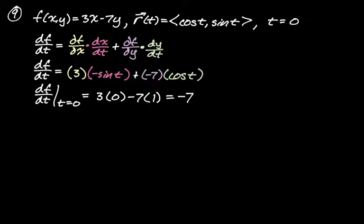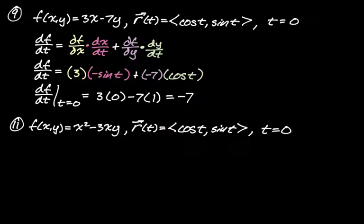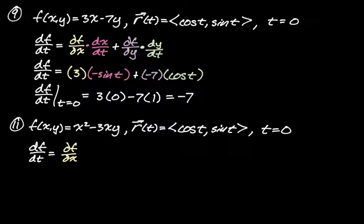That's a pretty good problem. Next is number 11: f(x,y) = x² - 3xy, our path is r(t) = (cos t, sin t), again the unit circle, evaluated at t = 0. We do the same thing — df/dt = (∂f/∂x)(dx/dt) + (∂f/∂y)(dy/dt). f is overall a function of t because x and y are both functions of t, so it's actually possible to rewrite f as a function just of t.